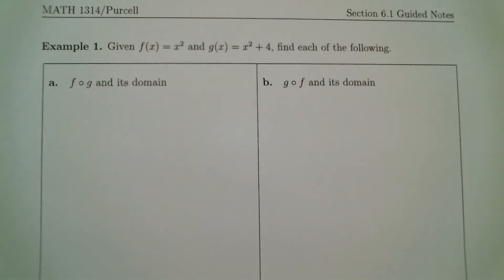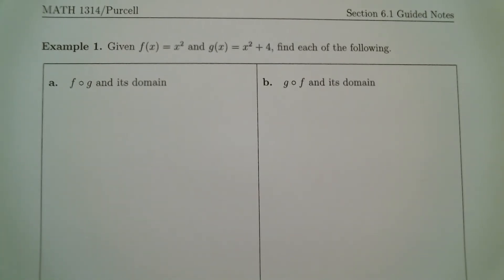Let's do an example of composition. Example one: given f of x is equal to x squared, and g of x is equal to x squared plus four. Find each of the following.